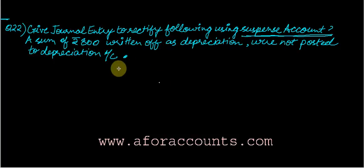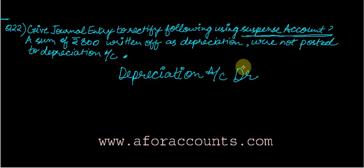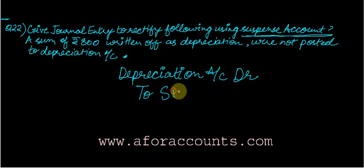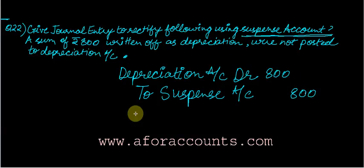Depreciation needs to be debited — an increase in expenses is always debited. So: Depreciation Account debit, 800. Since it was totally omitted, I don't need to do the right, wrong, reverse, and rectified steps. Just do what is right now. Because the question asks us to use a suspense account, the credit side will be Suspense Account. If you understand this, it is very simple; otherwise you won't know when to use suspense account and when not to.